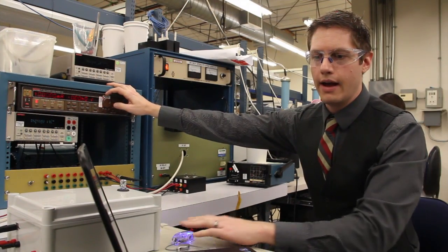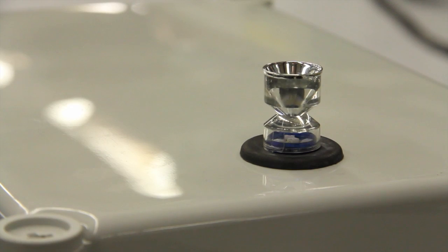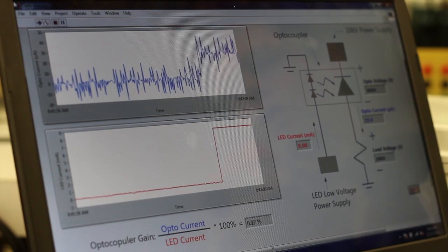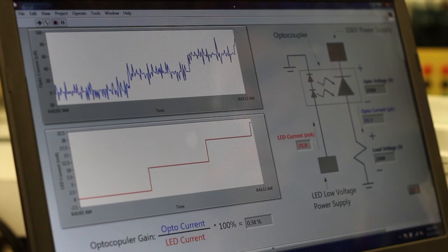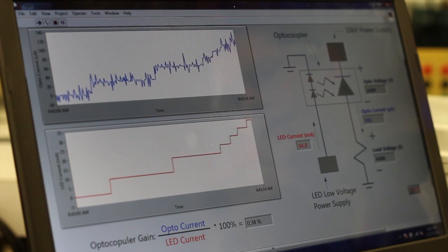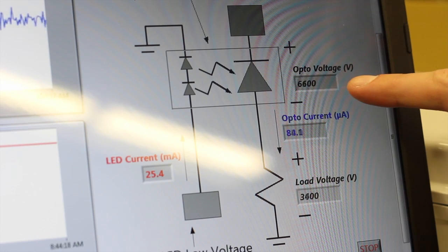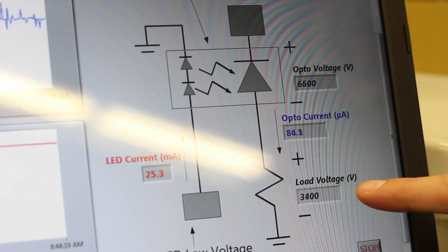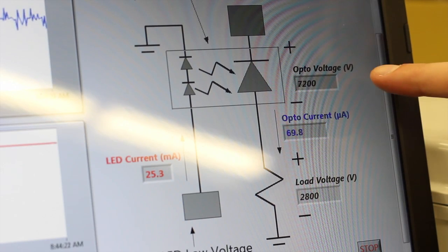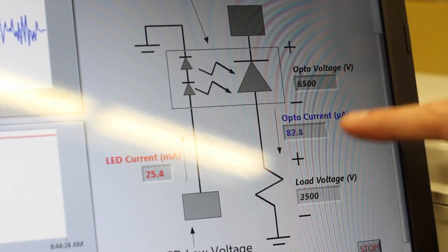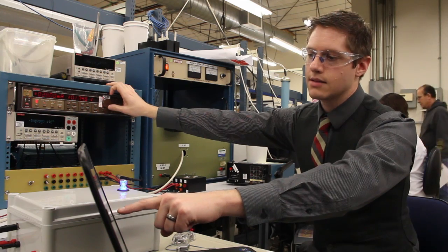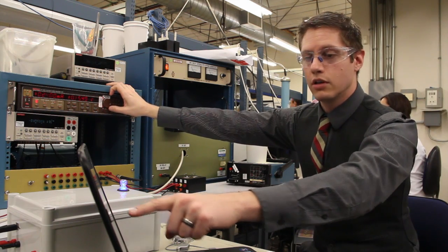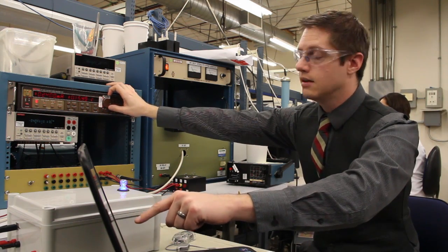As we apply high voltage and crank up the current here, you can see that the LED current waveform rises, so does the optocurrent waveform. As we increase the current on the LEDs, this optovoltage drops and load voltage increases. Basically what this means is there's more optocurrent going through that's allowing this load voltage to increase, making this a controlled load voltage based on low voltage LED current.